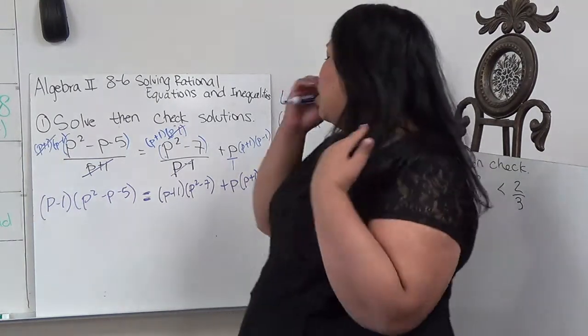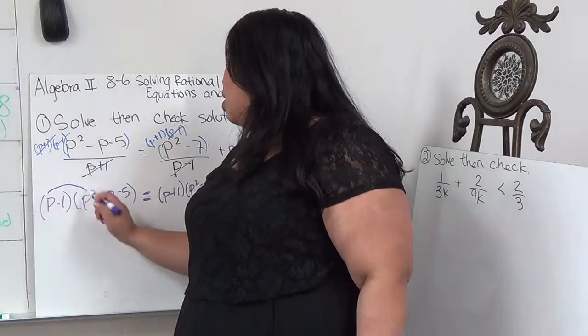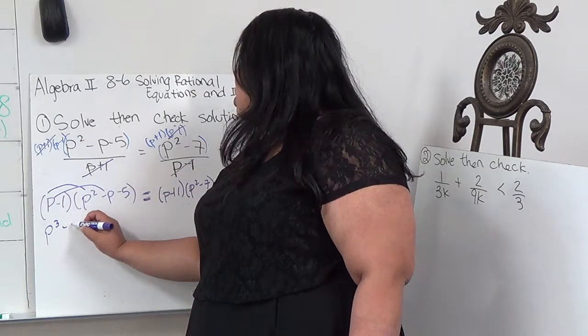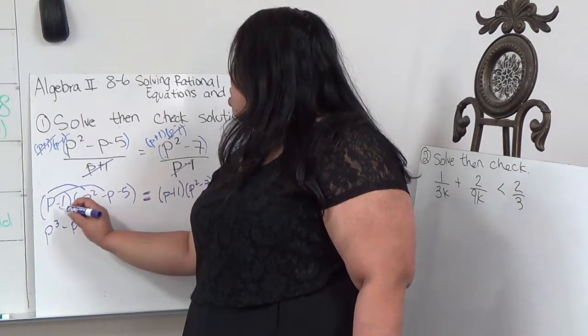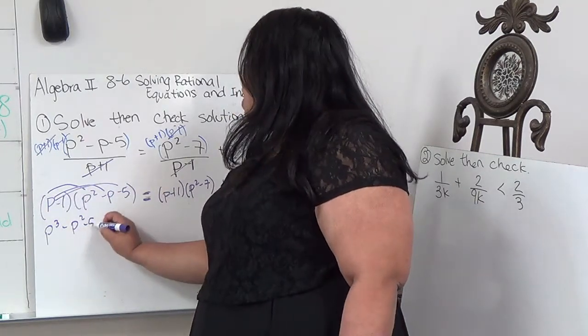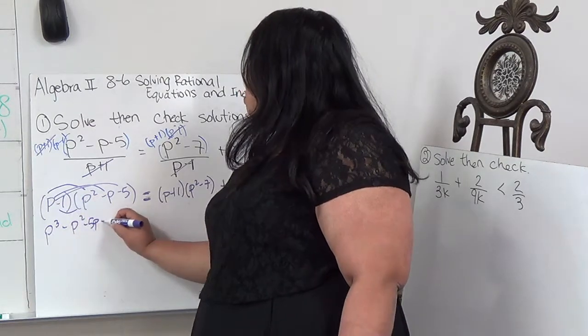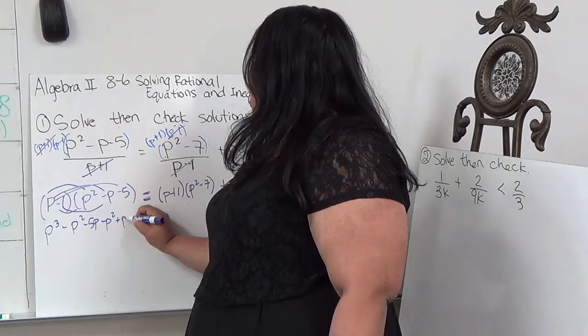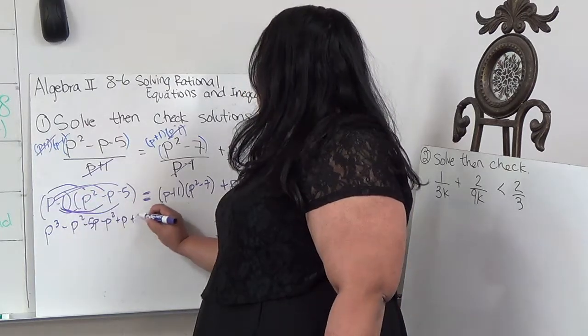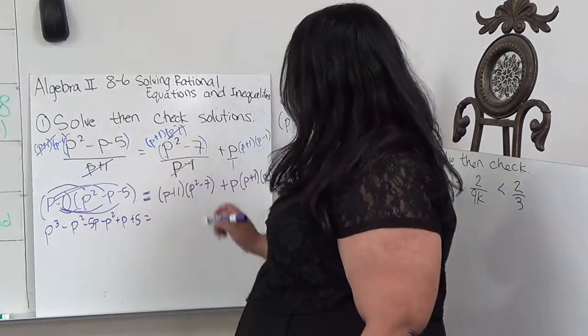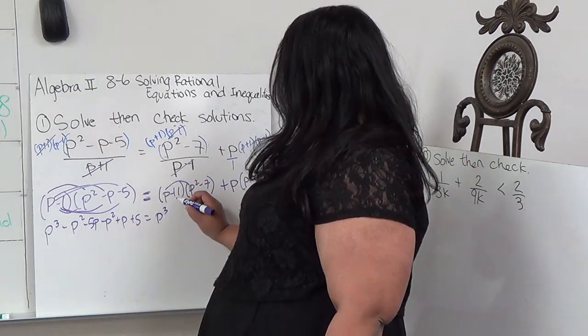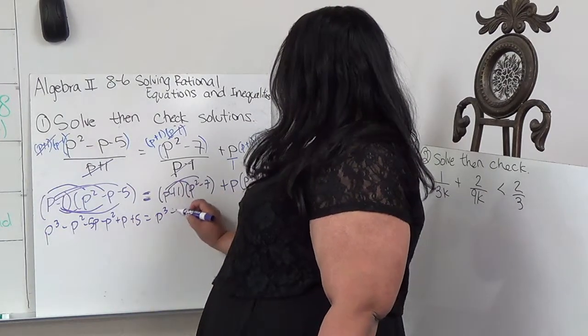So from here, I'm going to multiply it out and see what we can combine. So this will be P³ minus P², this would be P³ minus P² minus P squared, so minus 2P², plus... minus 5P plus 5 equals...